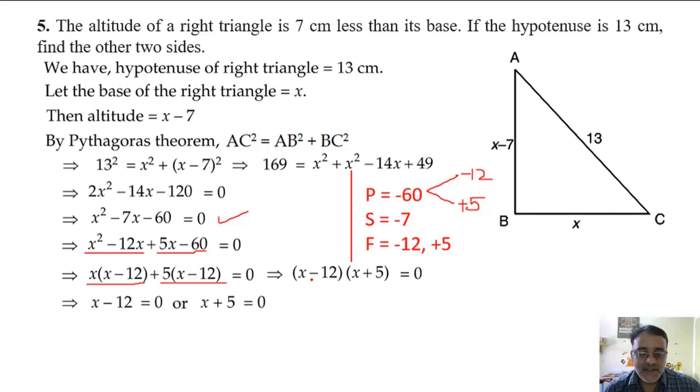X minus 12 equals 0 or x plus 5 equals 0. Final answer: x equals 12 or x equals minus 5. Now we have to reject x equals minus 5. Why? Because length cannot be negative. The length of a side cannot be negative.